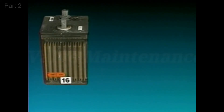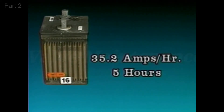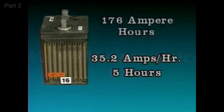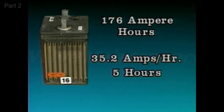The capacity of a cell changes with different current demands. For example, if the load demands 35.2 amps from this cell, the cell will be able to provide 35.2 amps for only 5 hours. This translates into an ampere hour rating of 176. So the cell capacity, or ampere hour rating, is lower at higher discharge currents.